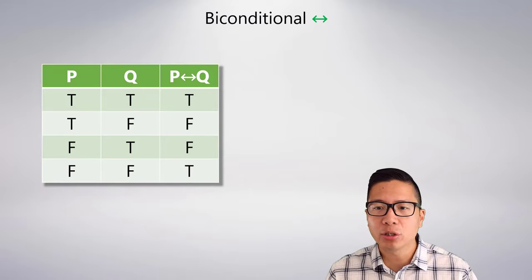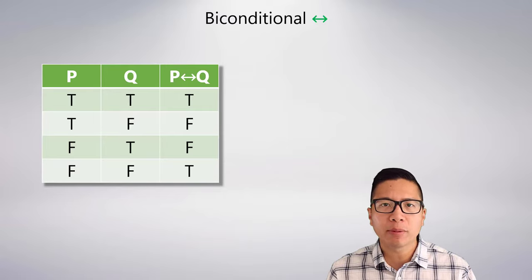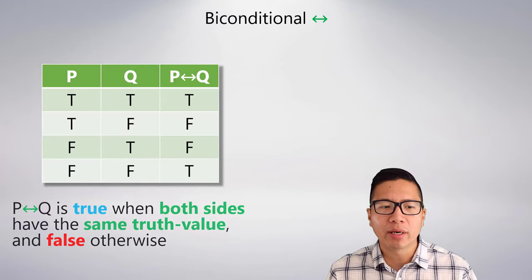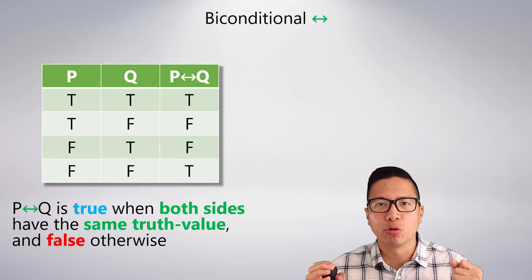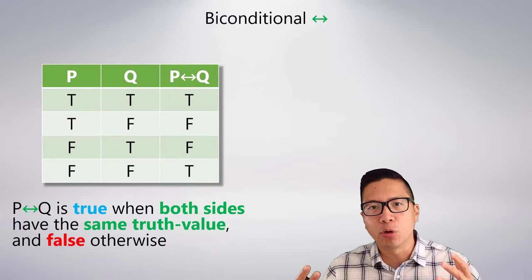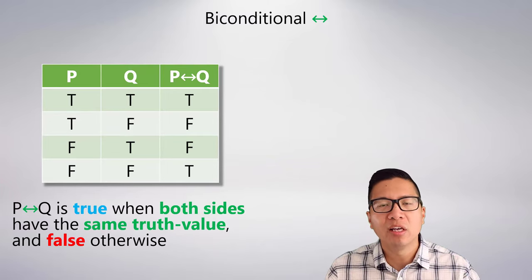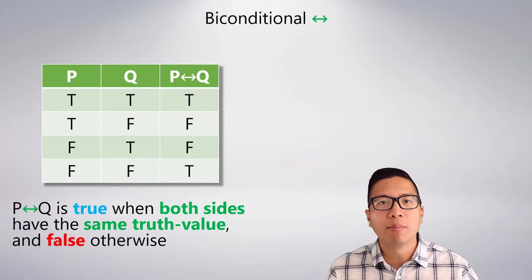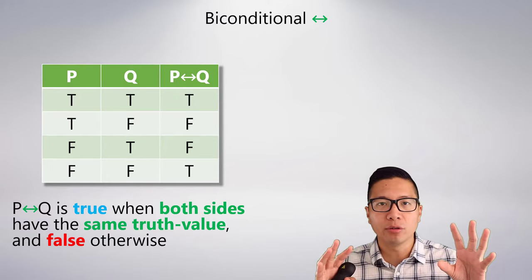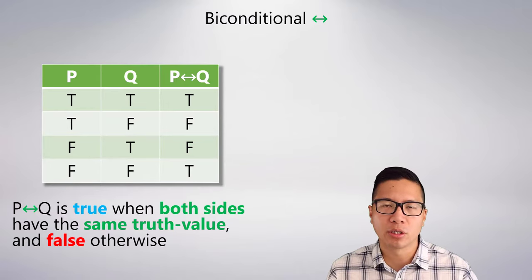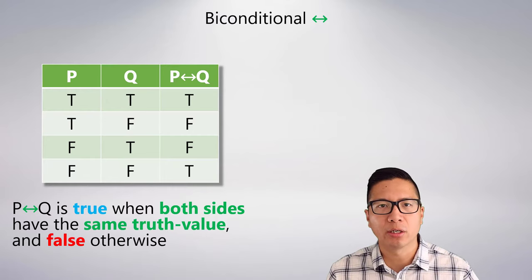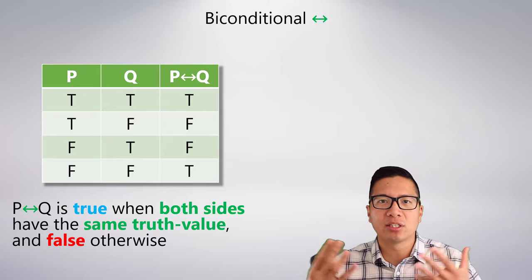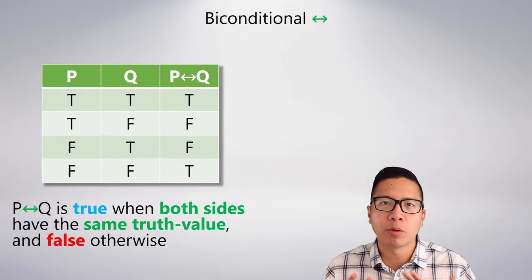Here's the truth table for the biconditional — the 'if and only if' relationship. The biconditional is true when both sides have the same truth value: if P and Q are both true it's true, and if P and Q are both false it's also true. But if P and Q have different truth values — true/false or false/true — the biconditional is false. So there are two ways for it to be true and two ways for it to be false.